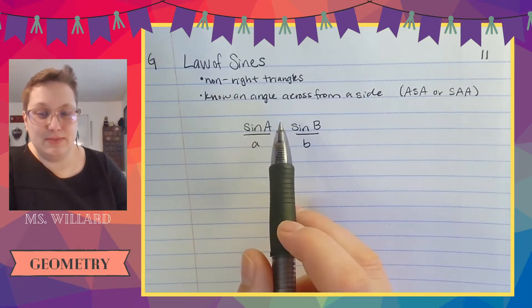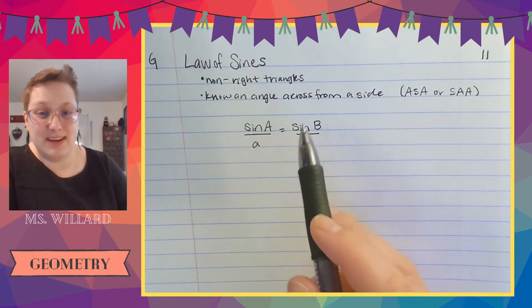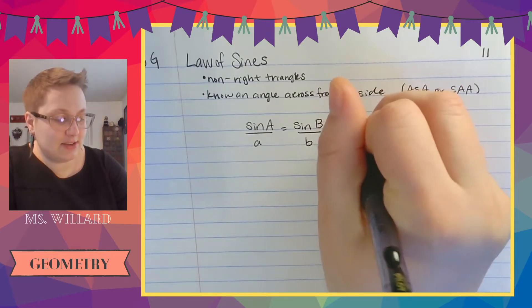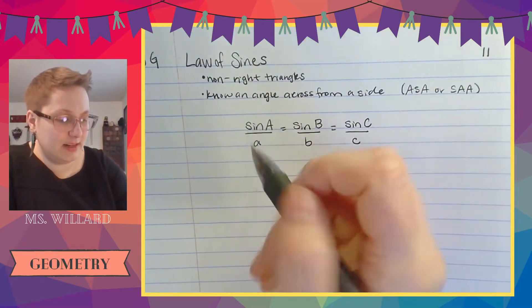I can take the sine of any angle over the side across from it and it'll be equal to the sine of another angle and the side across from it. Here's the sucky part about the law of sines is that I actually can do the third side too. I can do this for any side in the triangle any side any angle.